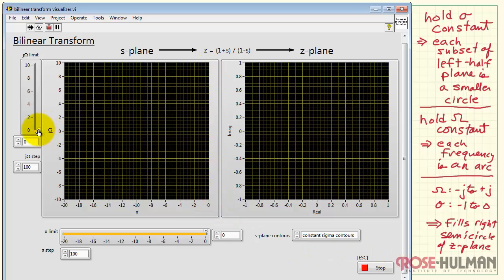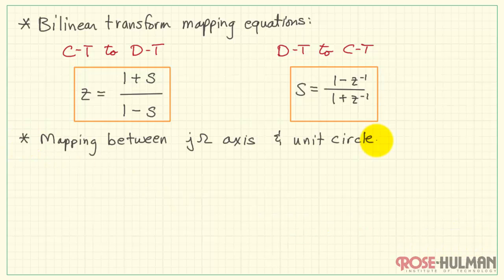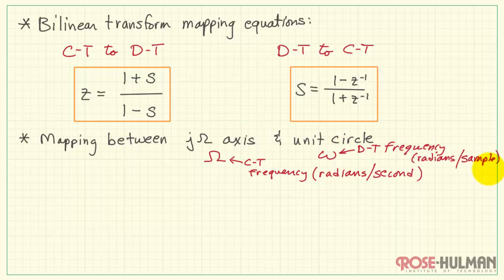Now let's wrap up our study here by considering one more time the behavior along the j-omega axis, and this leads into the notion of pre-warping. So we're looking specifically at the mapping between the j-omega axis and the unit circle, looking at capital omega, which is continuous time frequency with units of radians per second, and how that translates into discrete time frequency with units of radians per sample.